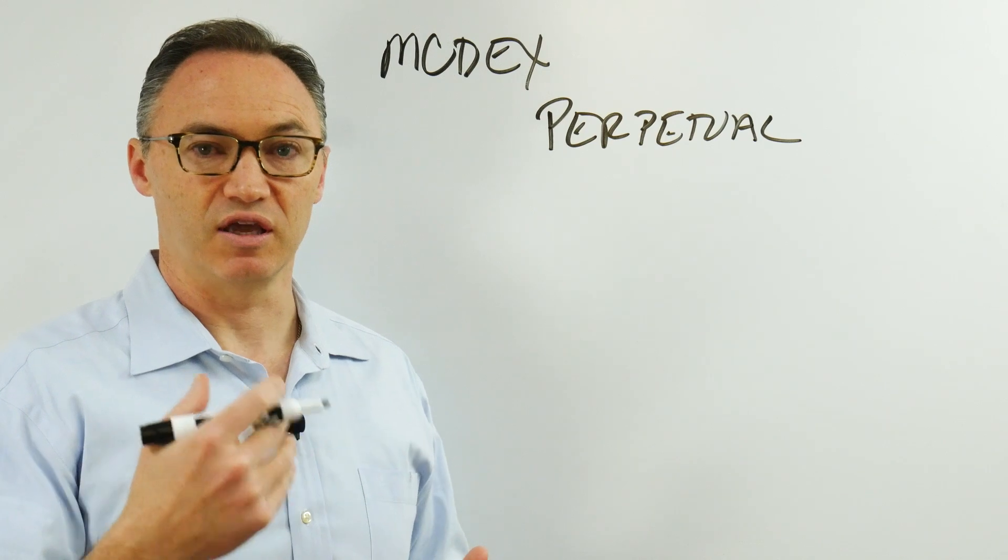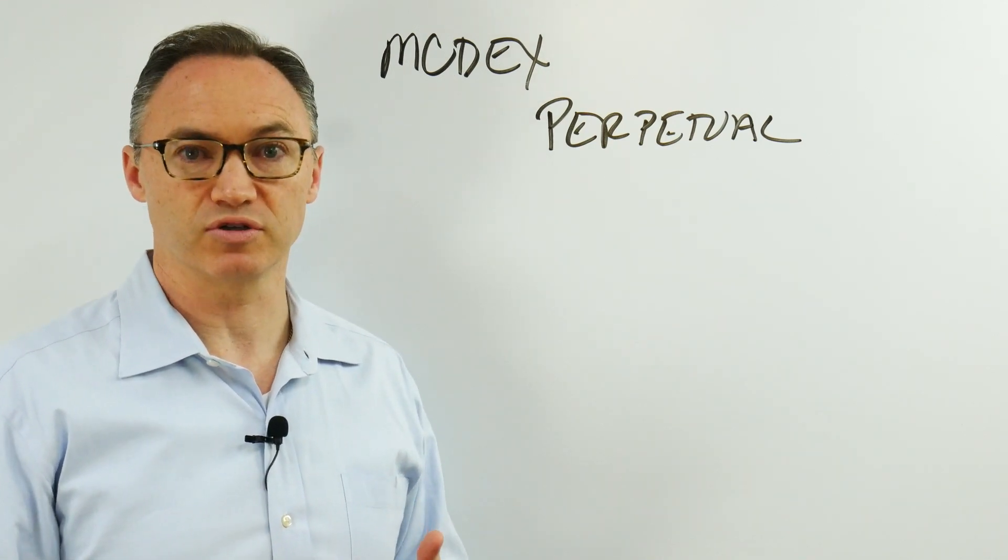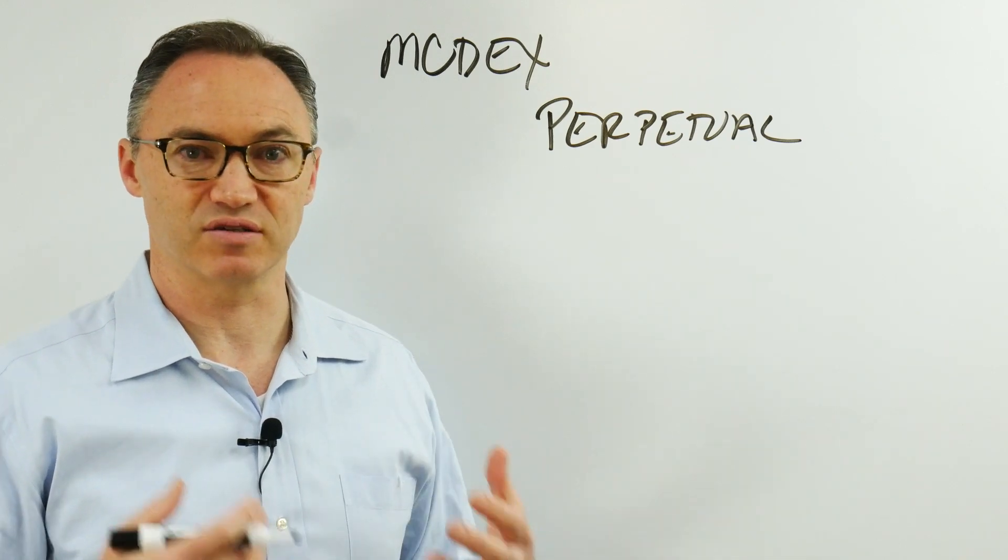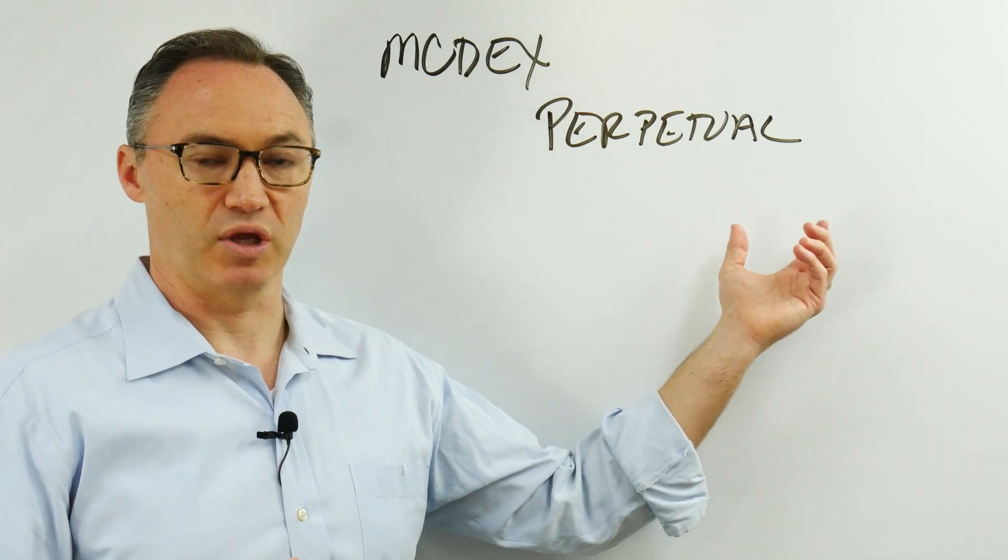A perpetual could be Bitcoin, ETH, even XRP on some centralized exchanges, but a perpetual could also be oil, S&P 500, Tesla, something like that—something where you can derive the price from elsewhere and create this derivative asset.